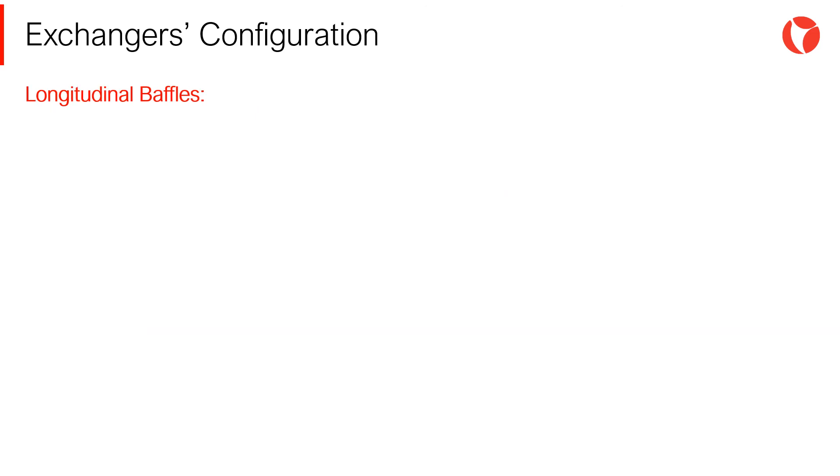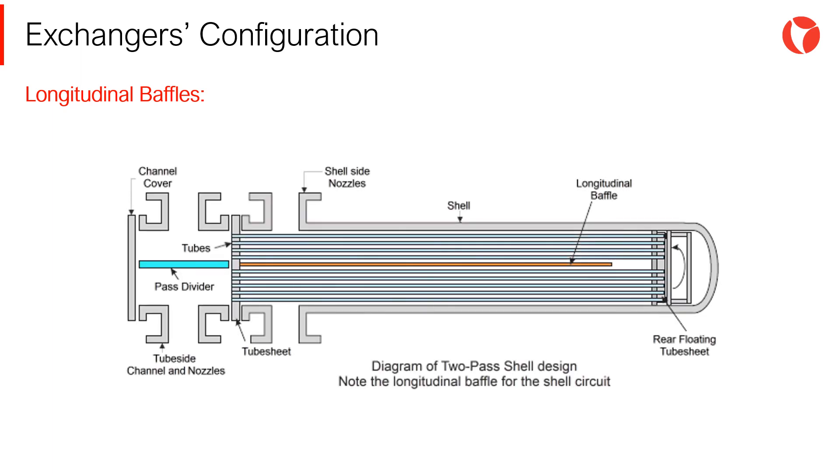All baffle configurations seen so far correspond to one shell pass. In other words, the fluid travels all the length of the shell only once. In some cases, sensible thermal gradients between the two fluids, for instance, it is required that the fluid travels the length of the shell more than once. Longitudinal baffles are used in these cases, as shown in the picture.